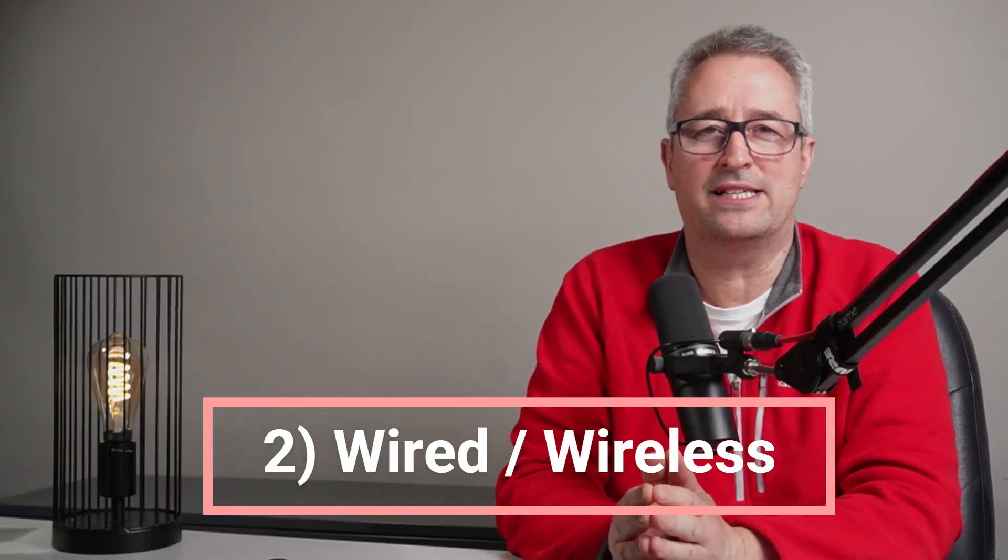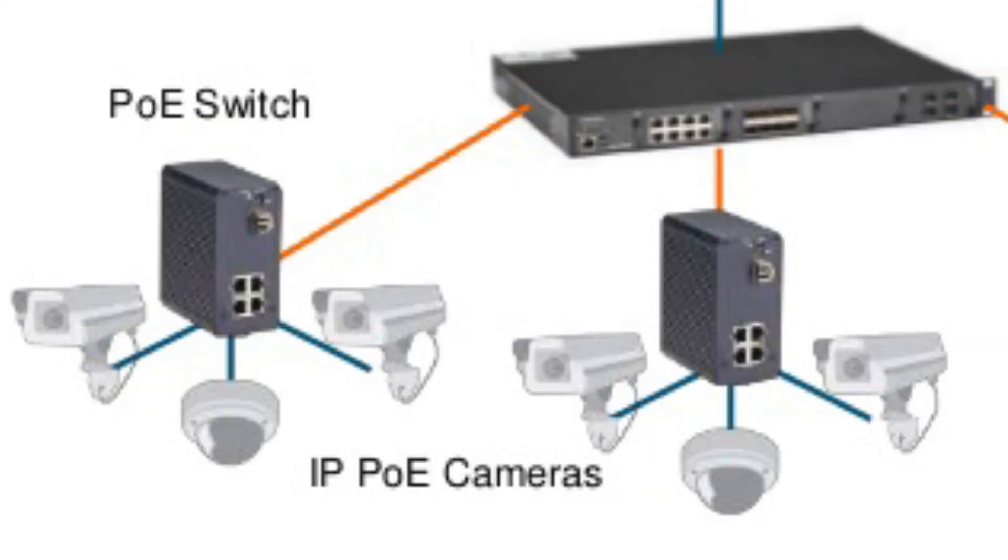Number two on the list would have to be wired versus wireless. I would always go wired if possible. The reasons being you have permanent power so you never have to worry about batteries running out, and secondly you've got a permanent connection to your camera so there's no issues with wireless interference or problems with your wireless network. Power over Ethernet cameras are really great because they offer one wire to carry both the power and the signal for the camera.